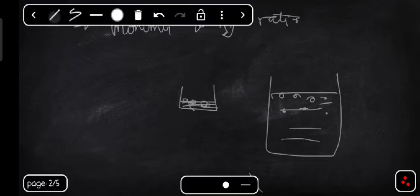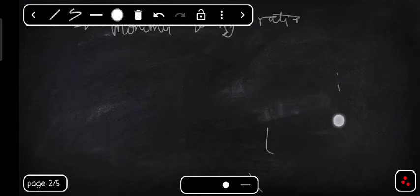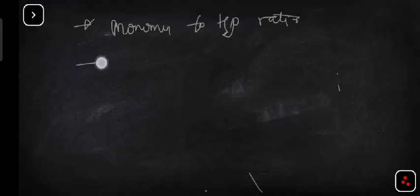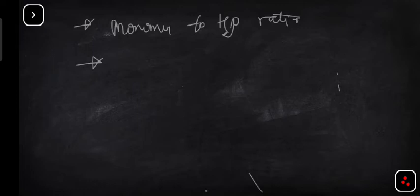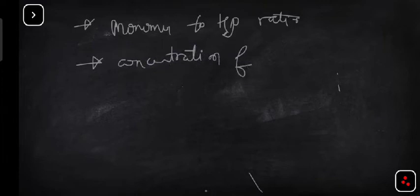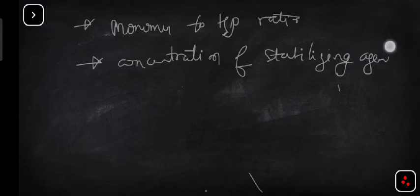The next factor is the type and concentration of the stabilizing agent — that is, the surface active agent added to avoid coalescing. It depends upon how much amount you are adding, meaning the concentration of the surface active agent or stabilizing agent. How much amount you are adding also matters for the size of the monomer droplets in the water.